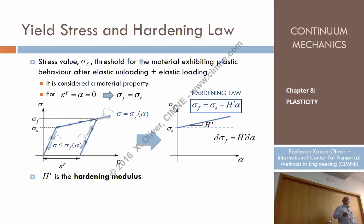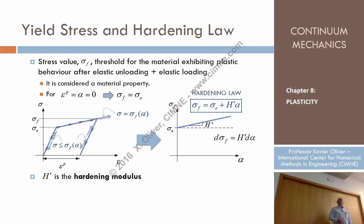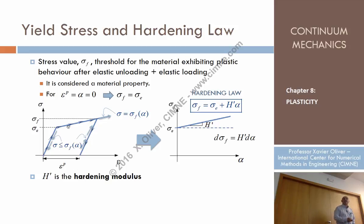After reaching the yield stress, the material does not go beyond it; instead, it moves along the elastoplastic branch where the stress equals the yield stress. So the yield function is zero on the elastoplastic branch. In summary: F less than zero indicates elastic behavior on all loading branches, and F equals zero indicates the material is on the elastoplastic branch.